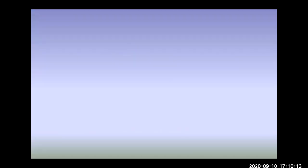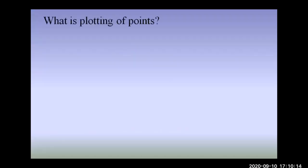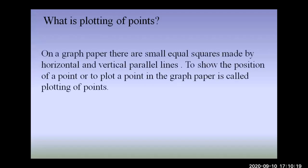What is plotting of points on a graph paper? There are small equal squares made by horizontal and vertical parallel lines to show the position of points. To plot a point on a graph paper means to mark its position — this is called plotting of points.